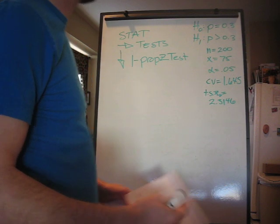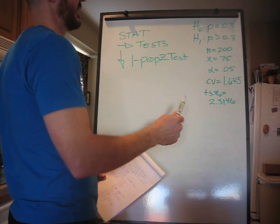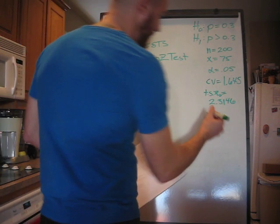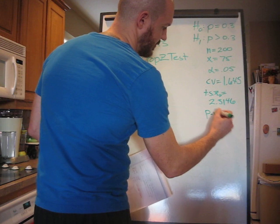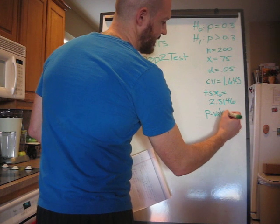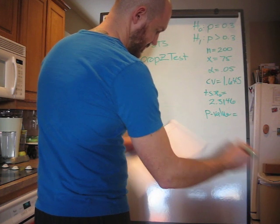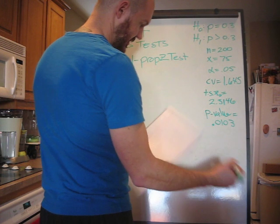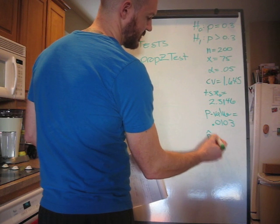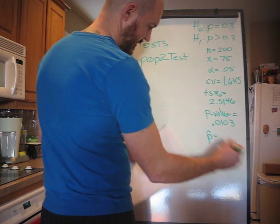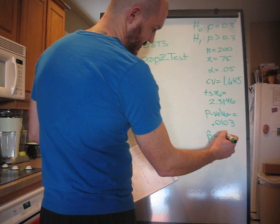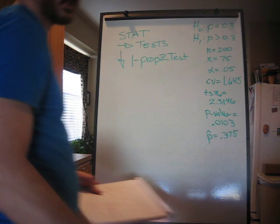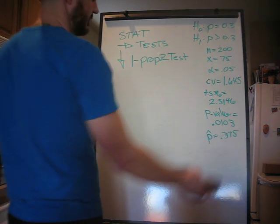You can go to draw if you want to see the curve. I've actually never done it. Calculate it. It's going to give you your z. It's also going to give you a p value. P value is 0.0103. And it's also going to give you a p hat. Don't get them confused. P hat's 0.375. I'm not going to use that right now. That could have been used for the equation.